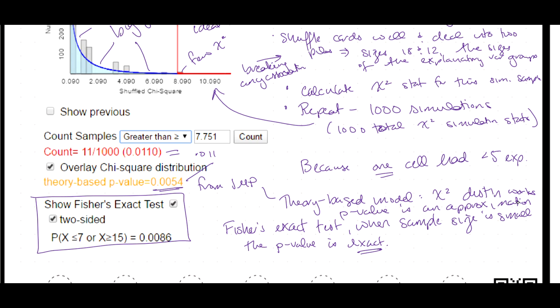Fisher's Exact Test says the p-value it gives is exact — this is actually the exact probability of obtaining a test statistic like this or more extreme if the null hypothesis is true. However, Fisher's Exact Test only works for two-by-two tables. If you have JMP Pro installed, there are exact test alternatives for larger tables, such as a three-by-two table like the sham acupuncture data. Those are extensions or modifications using nonparametric alternatives, but we won't cover those ideas this semester.